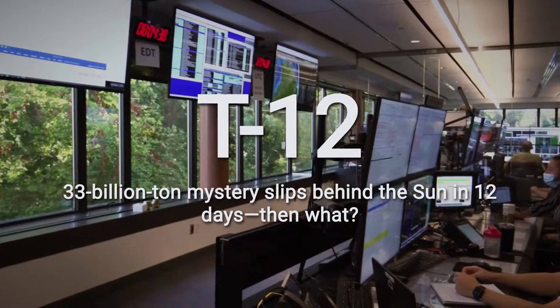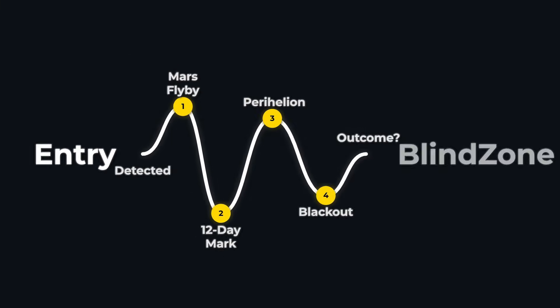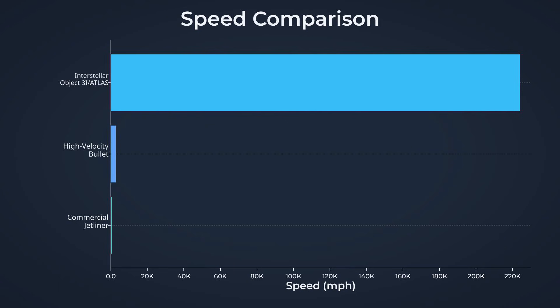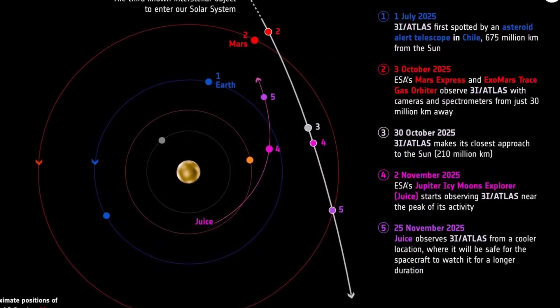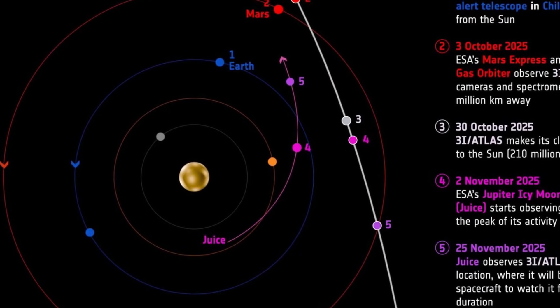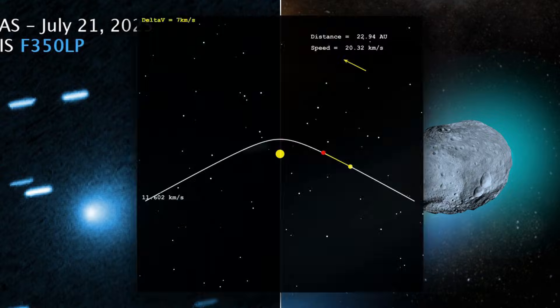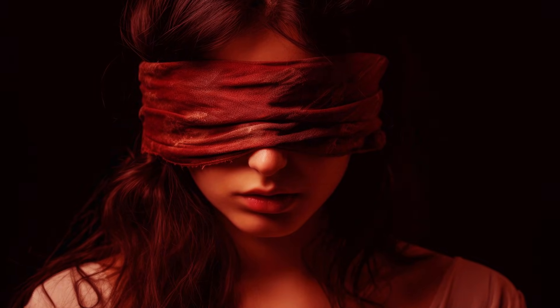Twelve days from now, a 33 billion ton interstellar visitor called 3i/Atlas will dive past the Sun at 80 times the speed of a bullet, and that's when things could go wrong. Its path is nearly aligned with the solar system's plane, something no random comet should do, raising the unsettling question: is this a natural wanderer or a machine designed to brake at the Sun and stop cold inside our solar system? While Earth's eyes will be blinded by the Sun itself, the only thing we'll know for sure is what emerges on the other side. The real danger lies in what we won't see when it matters most.